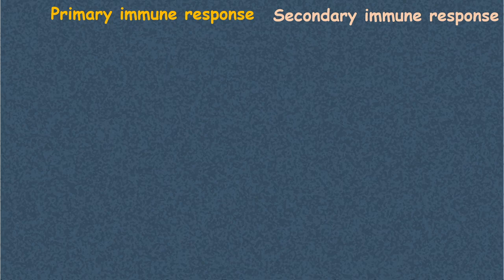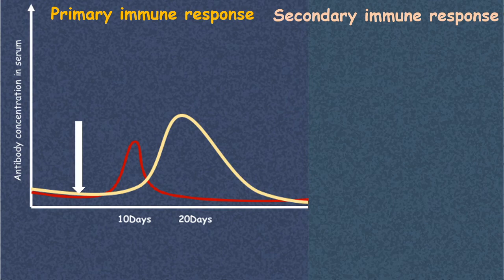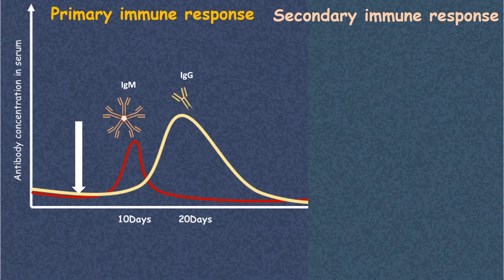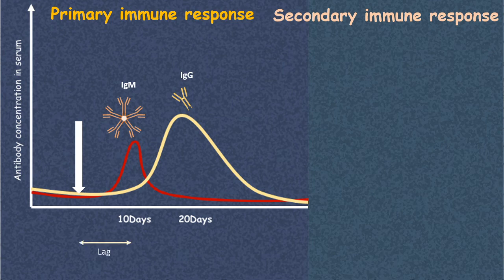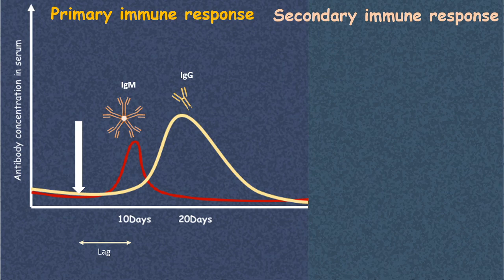Looking at the kinetics of the antibody-mediated immune response: the red line represents IgM levels and the yellow line represents IgG levels. After initial pathogen exposure, IgM antibodies appear around day 10 and IgG around day 20. There is a lag from the day of exposure to antibody appearance in circulation, because the pathogen must first be recognized, presented to adaptive components, and only then can antibody production begin — making it a lengthy process.